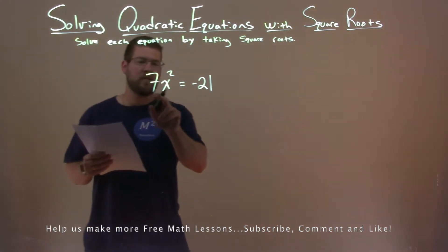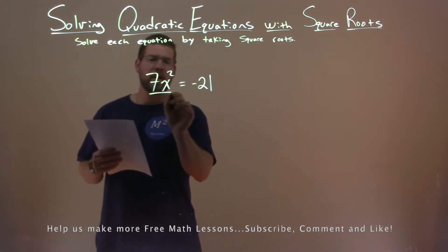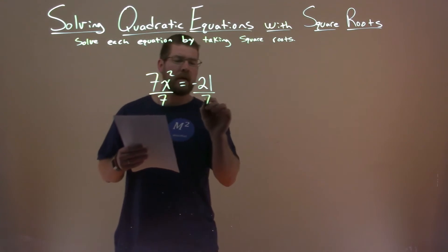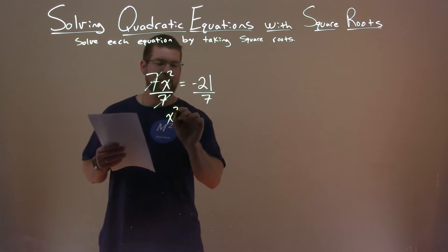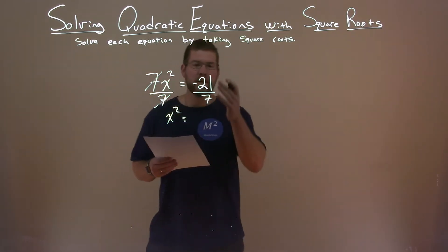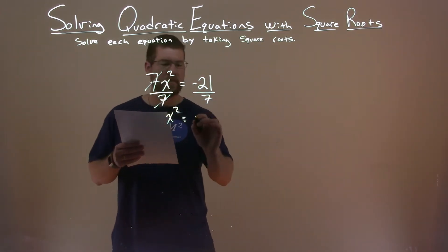First thing I see is there's a 7 times x squared. To get rid of that, I have to divide both sides by 7. These 7s are eliminated, and we have x squared now by itself. Well, negative 21 divided by 7 is negative 3.